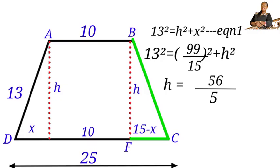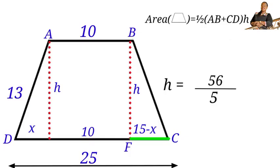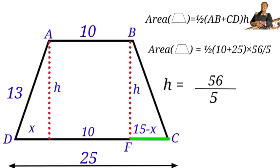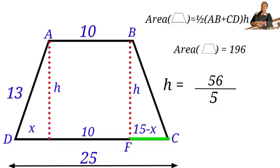Now let us find the area of the trapezium. Area = ½ × (AB + CD) × h. Substituting: Area = ½ × (10 + 25) × (56/5). Solving: the area of this trapezium equals 196 square units. Please like, share, and subscribe to my YouTube channel. Thank you for watching.